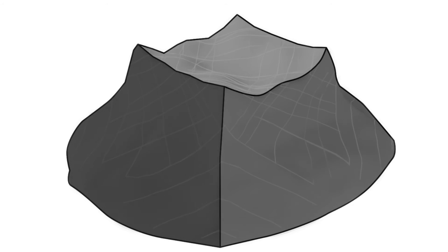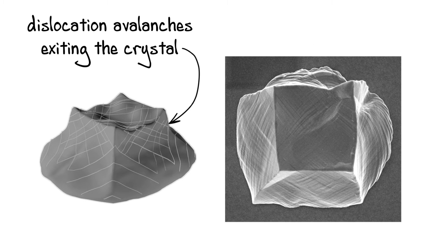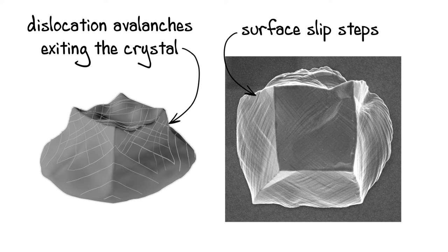As the pressure decreases to near the yield strength of silver, crystallographic slips ensue, and dislocation avalanches exiting the crystal form the surface slip steps.